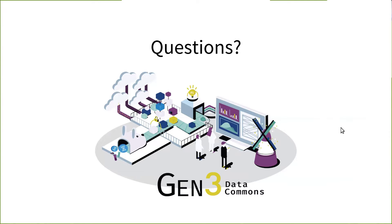First question: if I'm a user, how do I find data in Gen3 related to my research that I have access to? The part we talked about today is focused on data access. Before that, users need to figure out what data they want access to — that's a separate feature in Gen3 data commons. Gen3 has a data exploration component to figure out the data, which then feeds into the data access flow to find data location information.